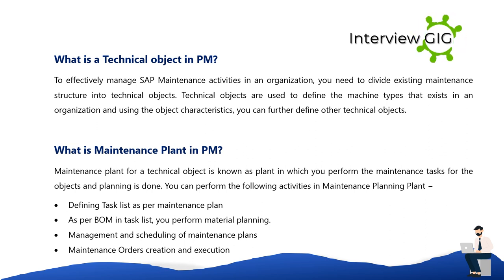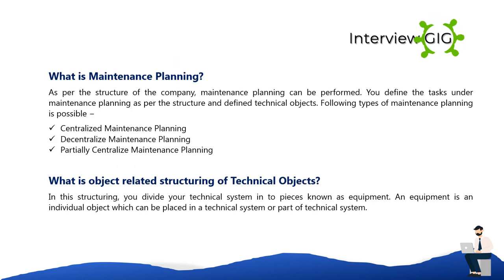What is a maintenance plant in PM? The maintenance plant for a technical object is the plant in which you perform the maintenance tasks for the objects and planning is done. In the maintenance planning plant you can define task lists as per the maintenance plan, perform material planning, management and scheduling of maintenance plans, and create and execute maintenance orders. Maintenance planning can be performed as centralized, decentralized, or partially centralized, depending on the structure of the company.